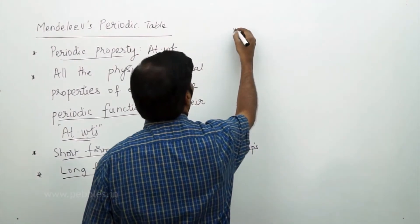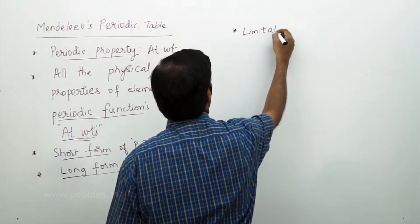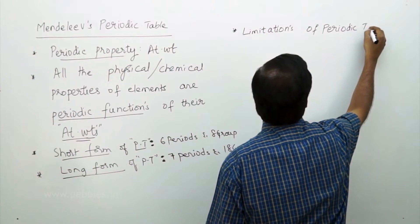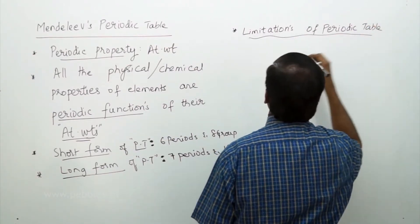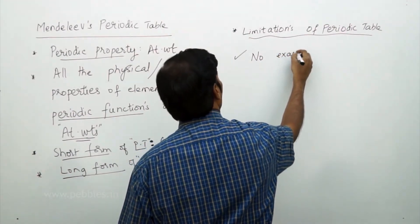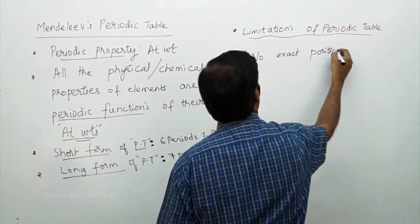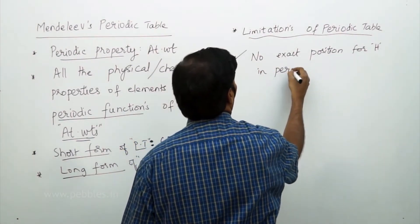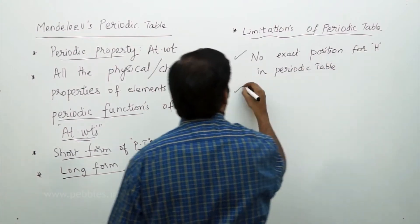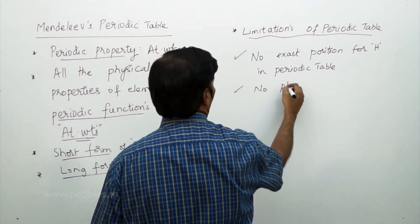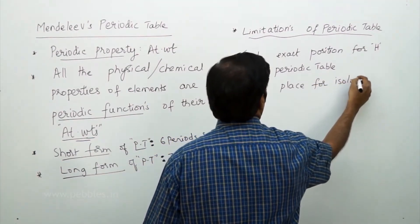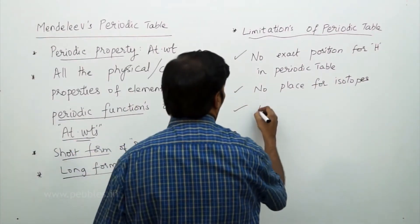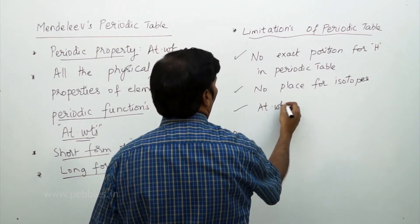If you look at the limitations of the periodic table: first, there is no exact position for hydrogen in the periodic table. Second, there is no place for isotopes. Also, the atomic weights of elements created ambiguity.